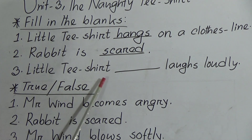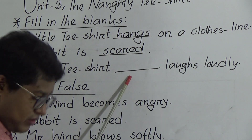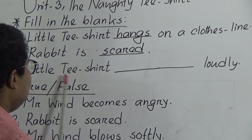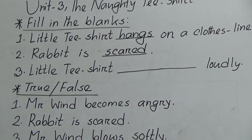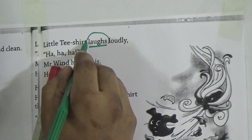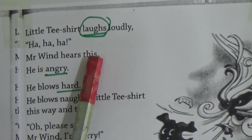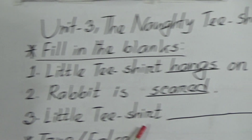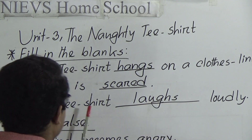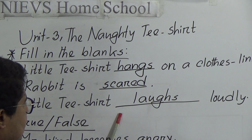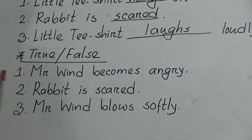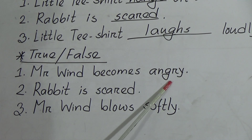Number three: little t-shirt ___ loudly. Let's go to the book again. You can see: little t-shirt laughs loudly. So in this sentence the word 'laughs,' L-A-U-G-H-S, is missing. We will write the answer: little t-shirt laughs, L-A-U-G-H-S. We add S because little t-shirt is one — that's why we add S after the verb. So little t-shirt laughs loudly.